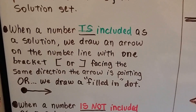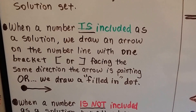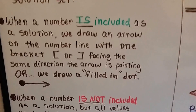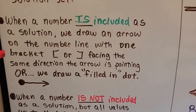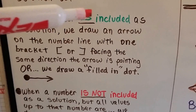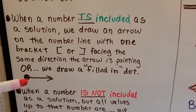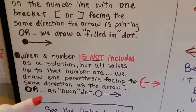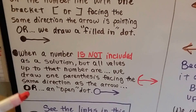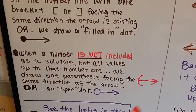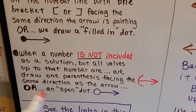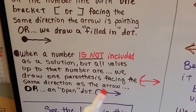When a number is included as a solution, we draw an arrow on the number line with one bracket — these boxy brackets — and they face the same direction the arrow is pointing, or we draw a filled-in dot to show that the number is included. When a number is not included as a solution but all the values up to that number are, we draw one parenthesis facing the same direction as the arrow, or an open dot with the arrow.